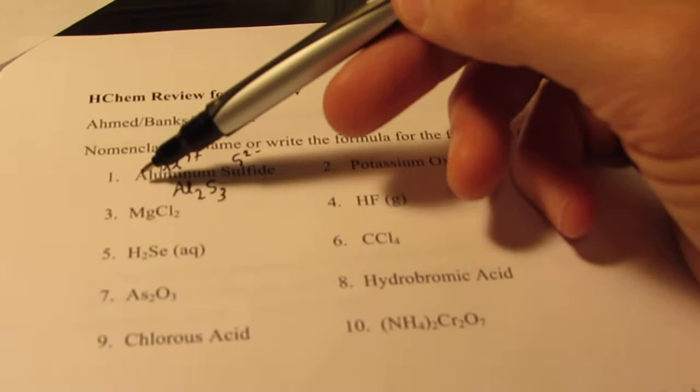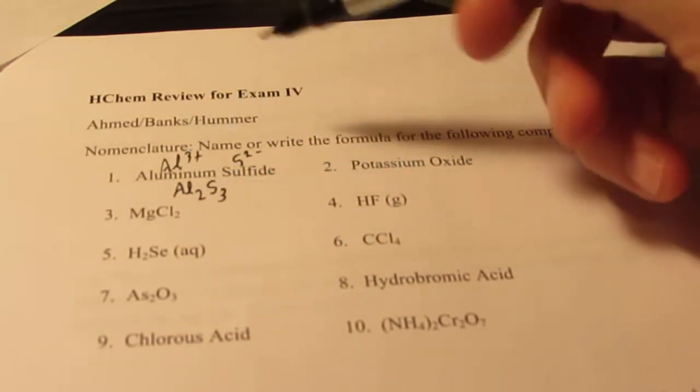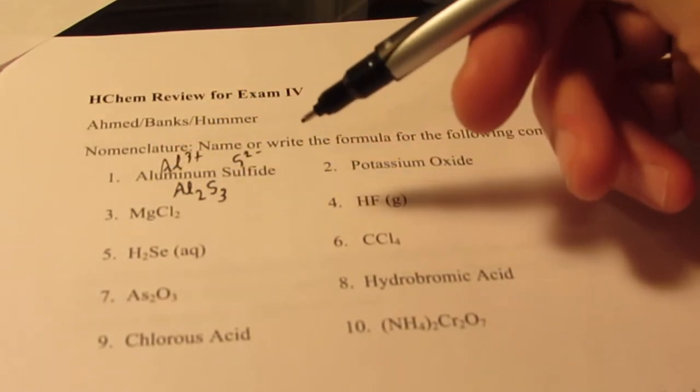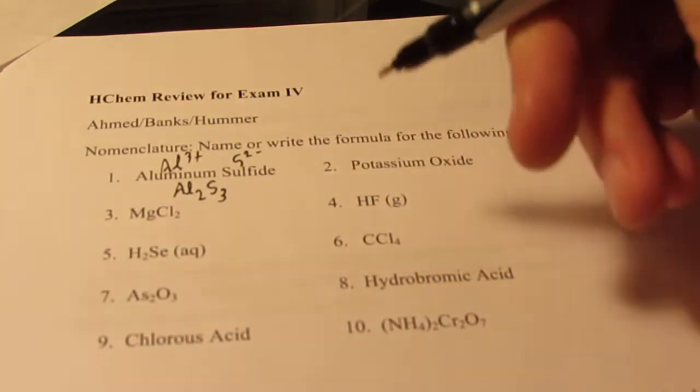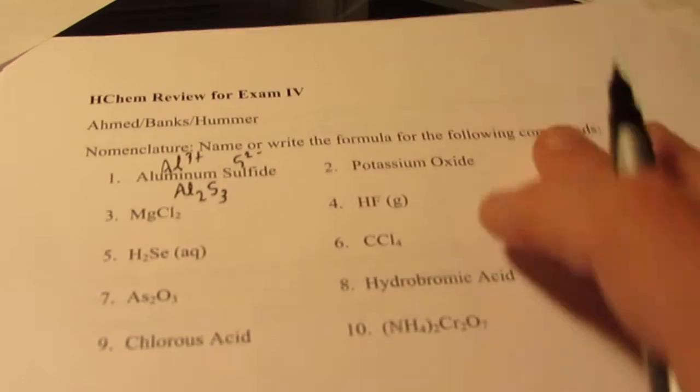So if this is positive 3 and this is negative 2, we've got to find a number they have in common so that they cancel out their charges, which is 6. So if I have 2 aluminums, that gets me to 6 positives. If I have 3 sulfurs, that gets me to 6 negatives. So that's perfect. Now notice there are no prefixes in this name. We only use prefixes when we name compounds when we're dealing with a non-metal bonded to a non-metal.